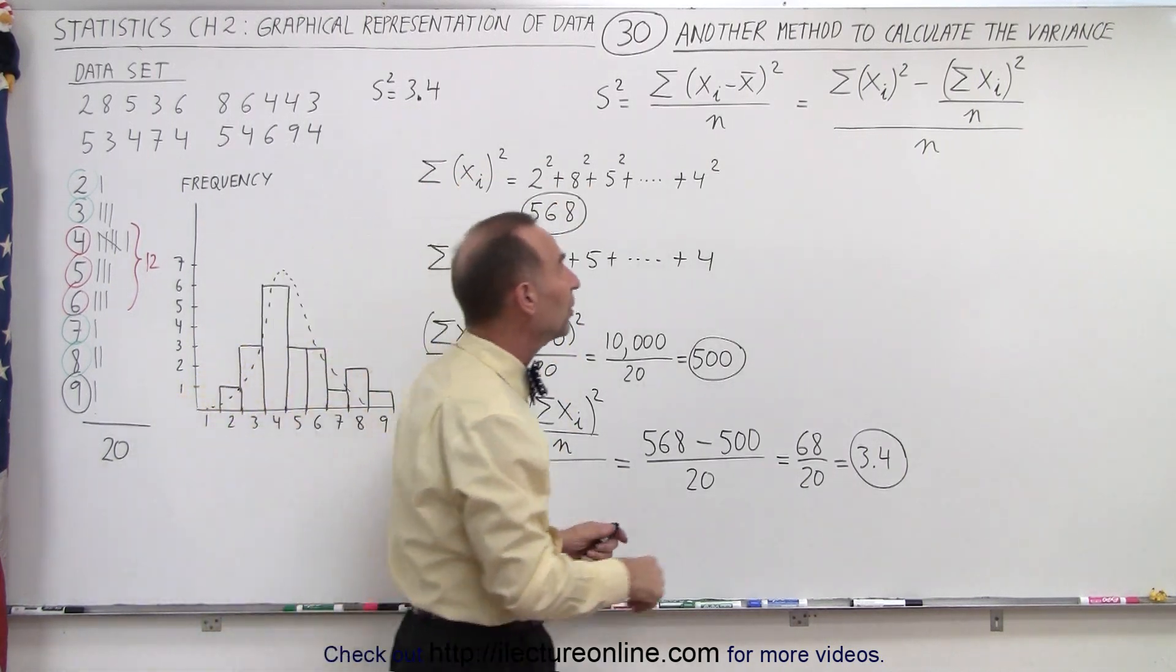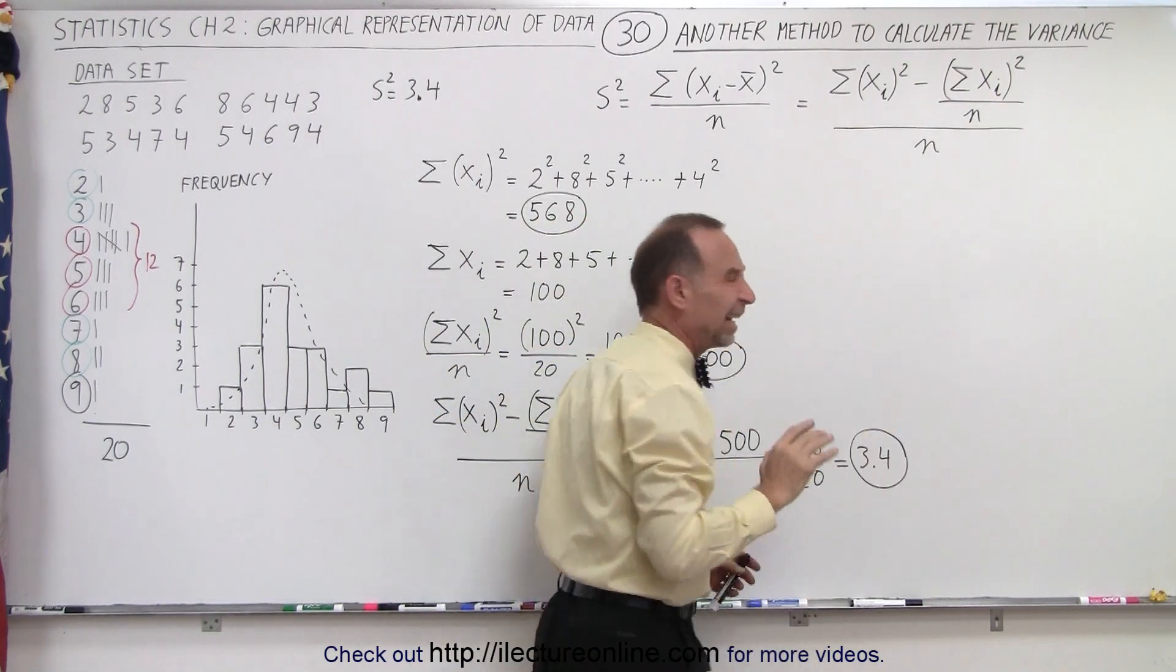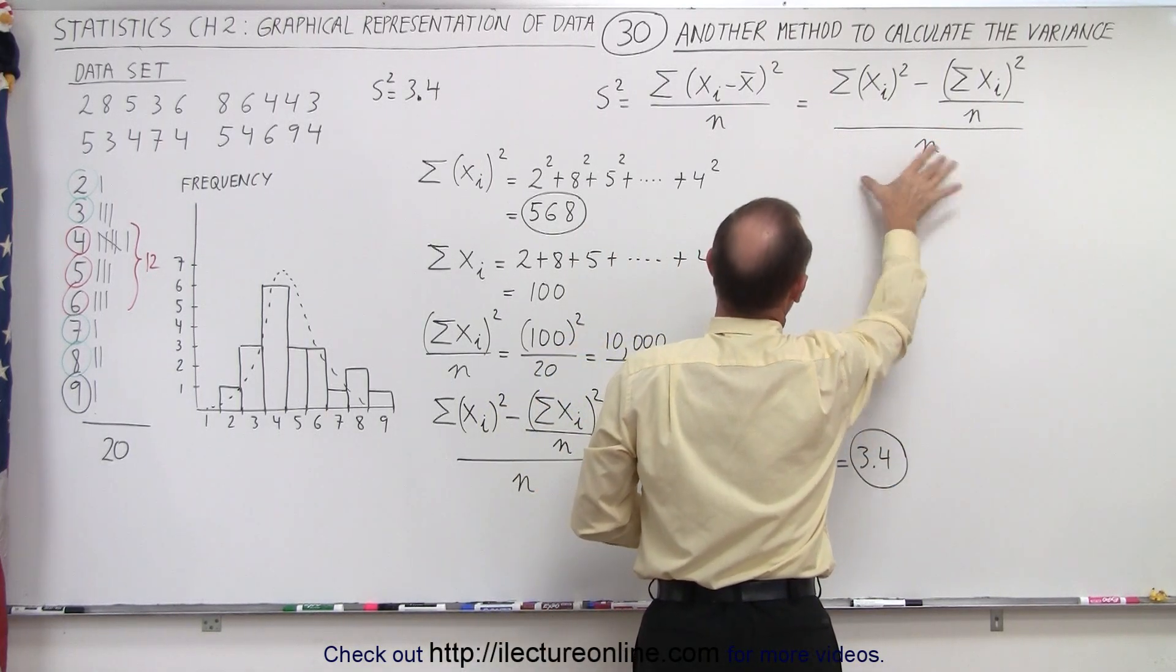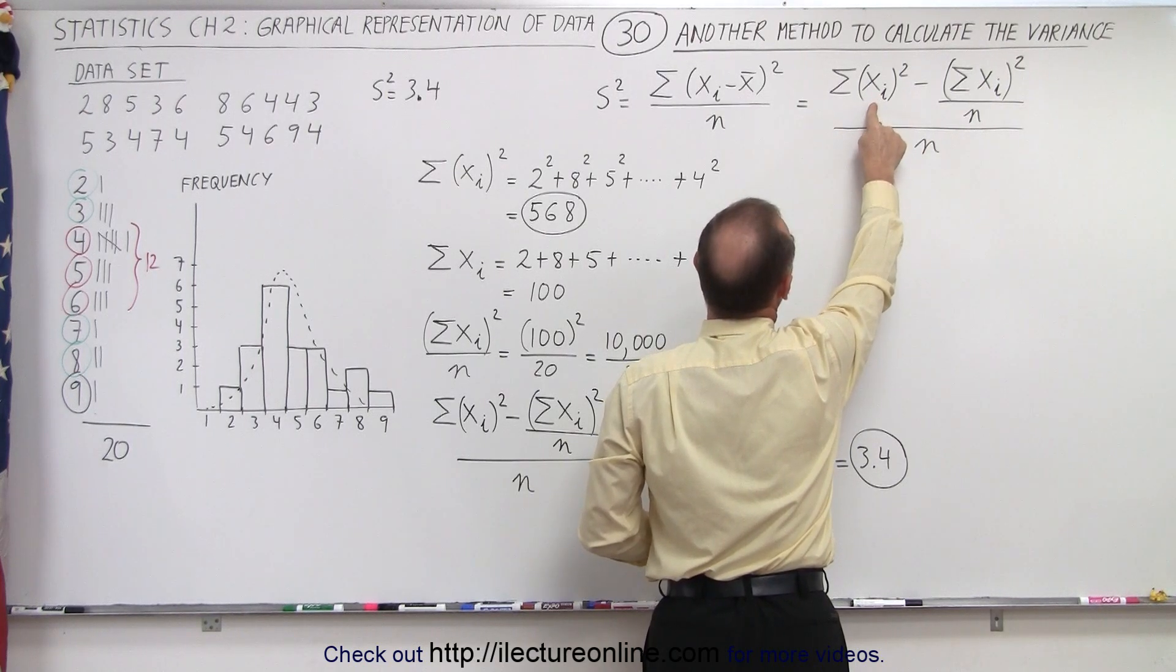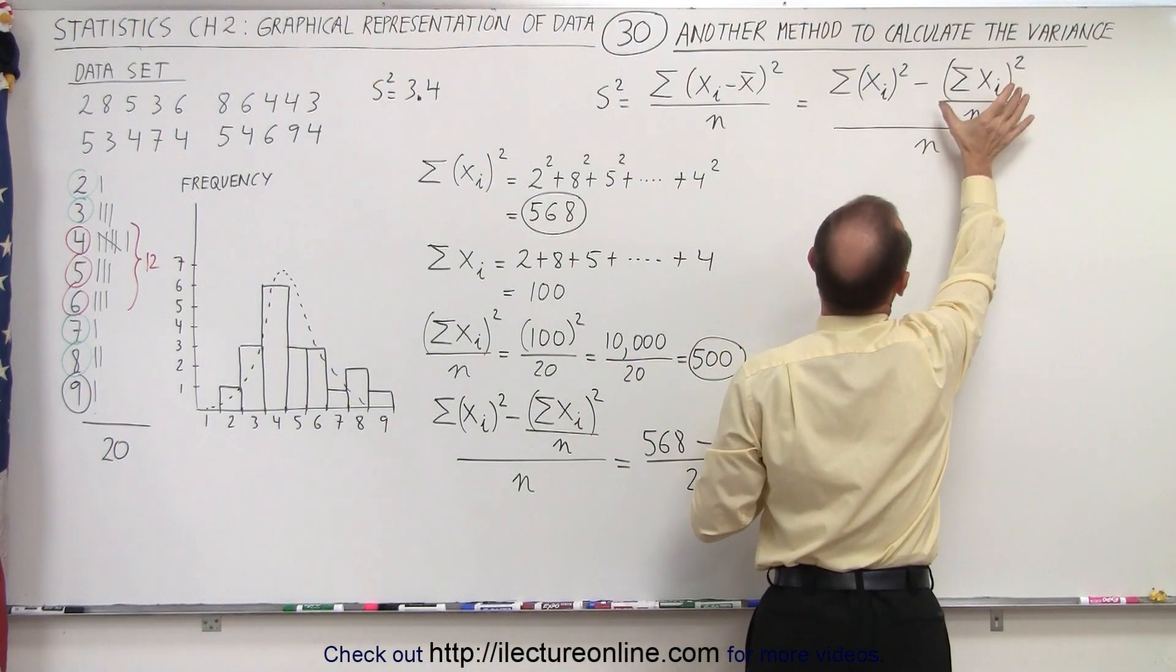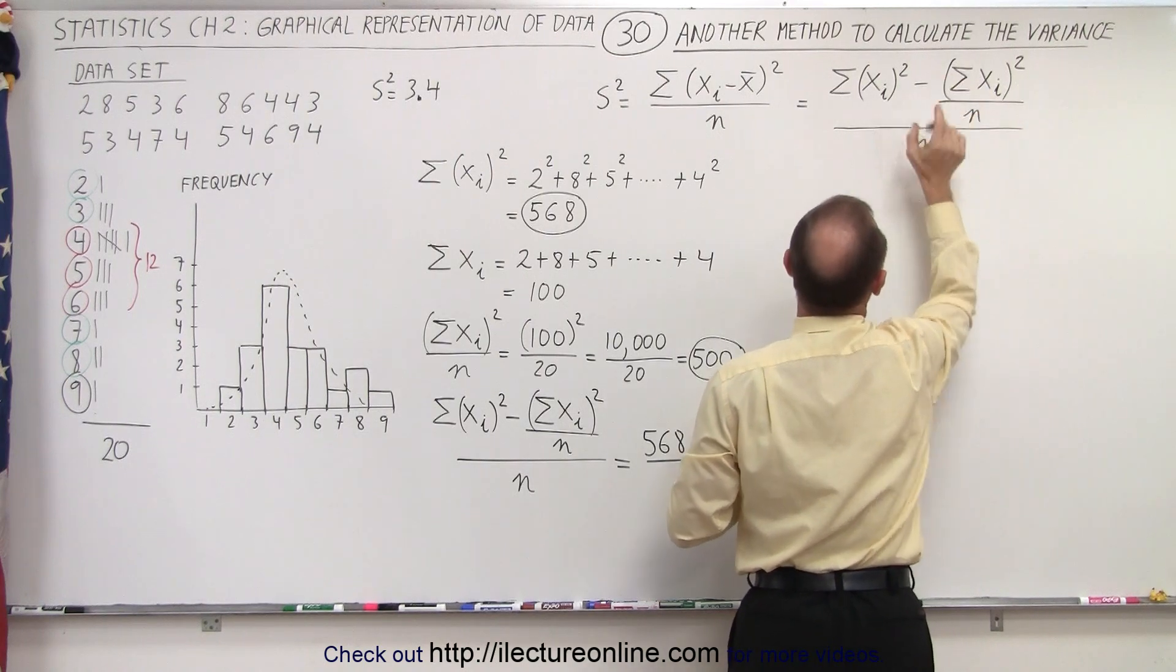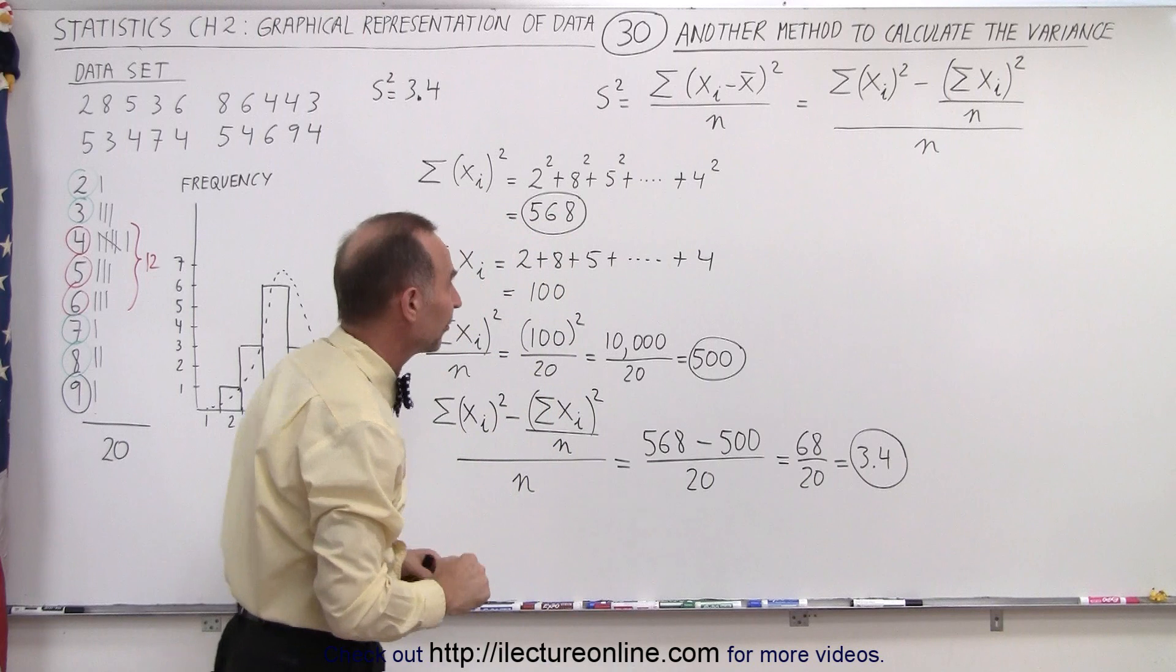Now the new equation is equal to this, and supposedly these two are the same. In the next video we'll show you why they are the same, but let's assume for now that they are. What we need to do here is sum up the square of each of the data points, subtract from that the square of the sum of the data points divided by n, and then the difference is divided by the number of data points, and we should get the same value for the variance.